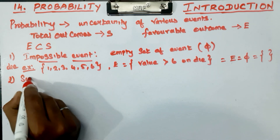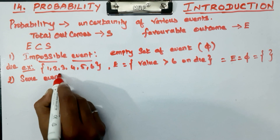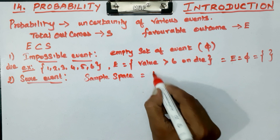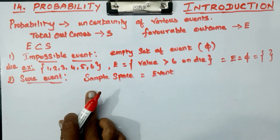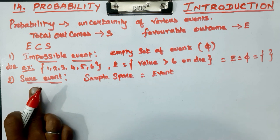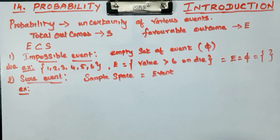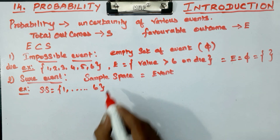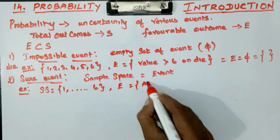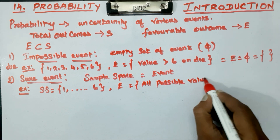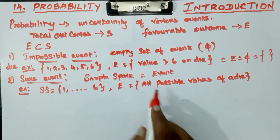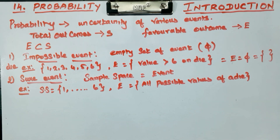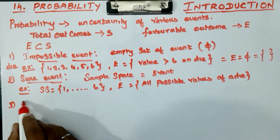Next is the sure event. In a sure event, the value of the event equals the value of the sample space. For example, with a die the sample space is {1, 2, 3, 4, 5, 6}. If the event is all possible values of the die - 1 to 6 - then this is a sure event.